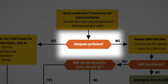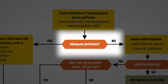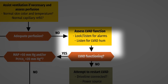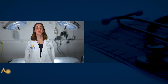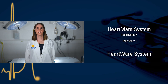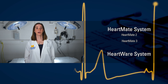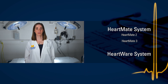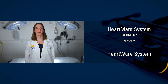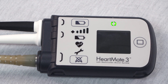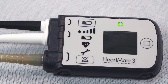In an unresponsive VAD patient, it is crucial to determine if the device is on and functioning properly. The two main systems currently in use are the HeartMate system, including the HeartMate 2 and the HeartMate 3, and the HeartWare system. Each has a slightly different set of connections, which we will briefly review.